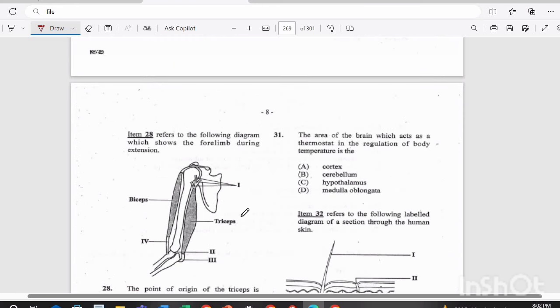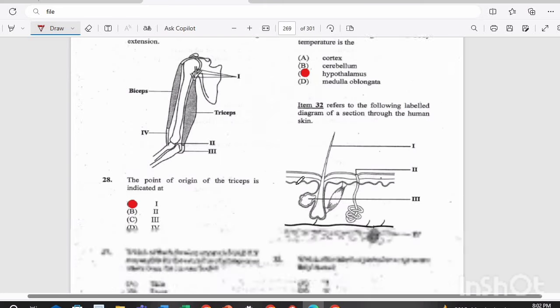Item 31. The area of the brain, which acts as a thermostat in the regulation of body temperature, is the A, cortex, B, cerebellum, C, hypothalamus, or D, medulla oblongata? The answer there is C, your hypothalamus.